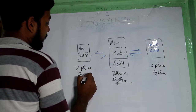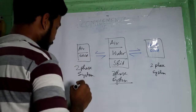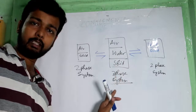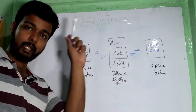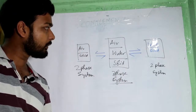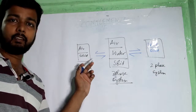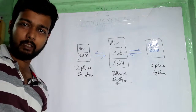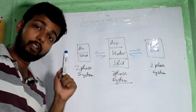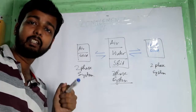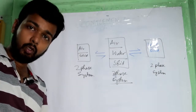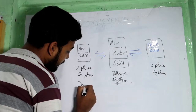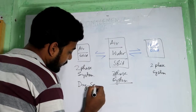Two-phase system. But there is some significance. Three-phase system is clear — if not, do check the previous video. In the case of air and solid, is there any kind of water? No. As there is no water, the soil is dry. There is no wetness. So this is called dry soil.